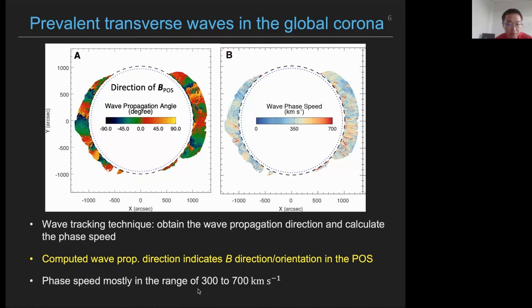To obtain the phase speed, we apply the wave tracking technique to the entire field of view. This allows us to track the propagating of these waves and also calculate their directions. Because the kink waves propagate along the magnetic field lines, the wave propagating angle is essentially the plane of sky orientation of the coronal magnetic field. So we have measured the plane of sky direction of the magnetic field in the global corona using actual coronal observations. And based on the propagating direction, we can further calculate the wave propagation speed, that is the phase speed of these waves. The computed phase speed mostly falls in the range of about 300 to 700 kilometers per second. These are the typical values in the solar corona.